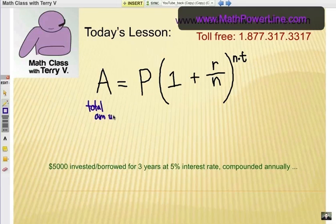Next is P. That's the principal. In this case, how much you're going to either invest or borrow. So that is P, principal.